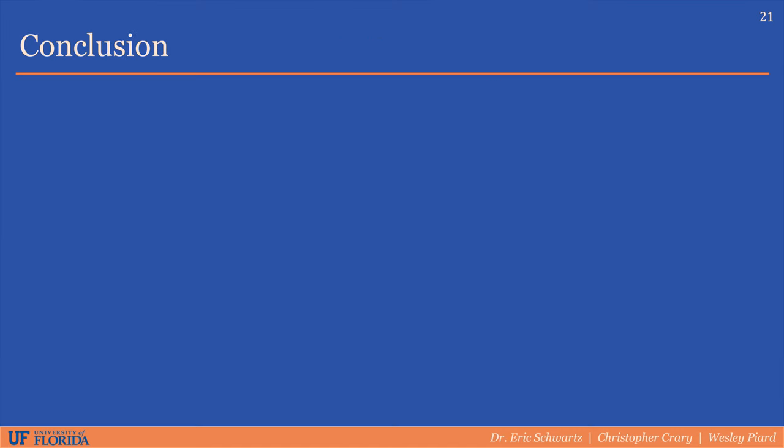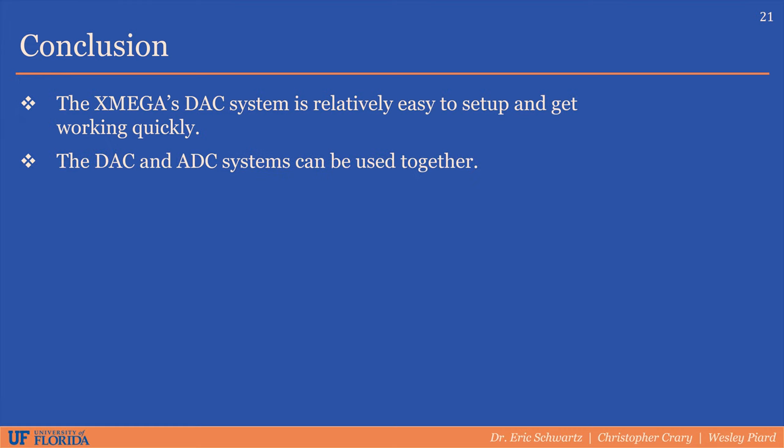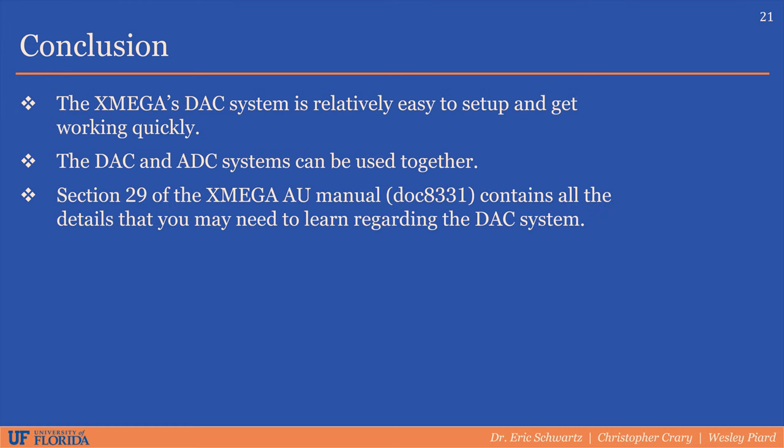The DAC system of the XMega is one of the easier peripherals to get set up, and it can be used in tandem with the ADC system to translate back and forth between the analog and digital domains. This is crucial for applications such as digital signal processing, where analog voltage signals can be sampled by the ADC, converted into a digital format, and then processing such as adding effects like echoes can be applied digitally. You can then use the DAC to output it back to an amplifier or speaker into the analog domain. You can find more details about the DAC system in section 29 of the XMega AU manual.